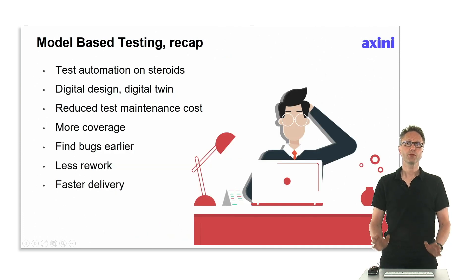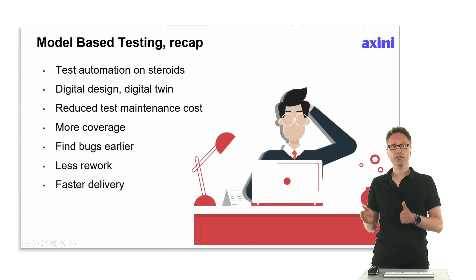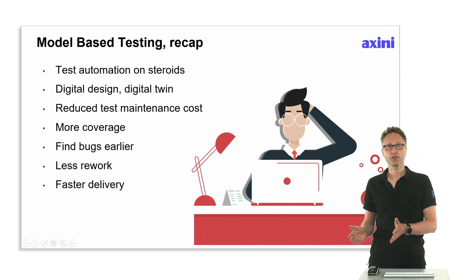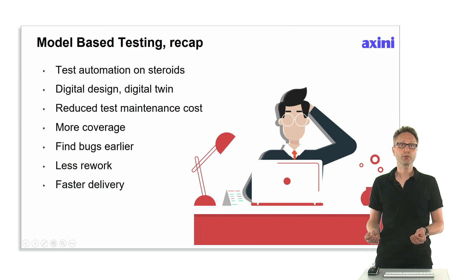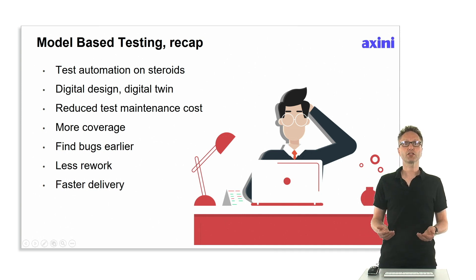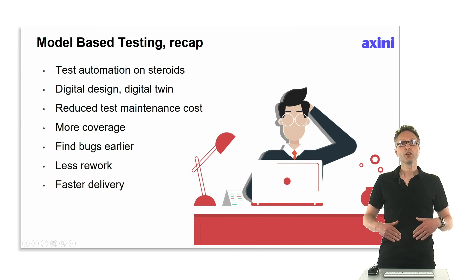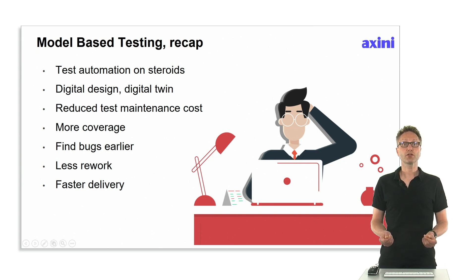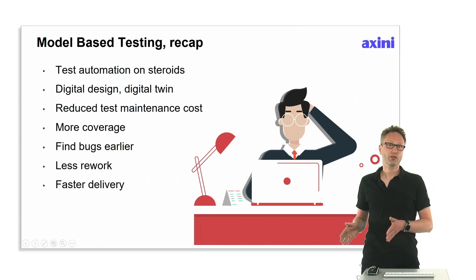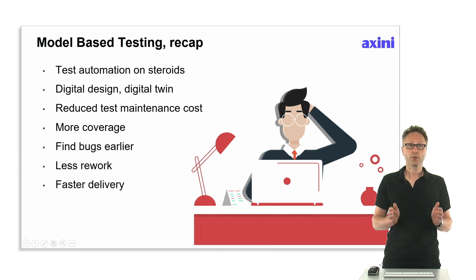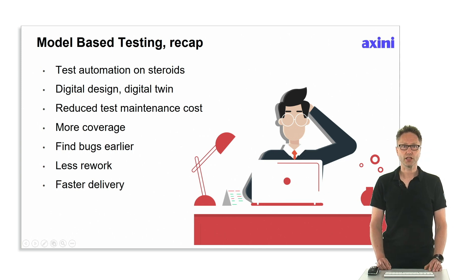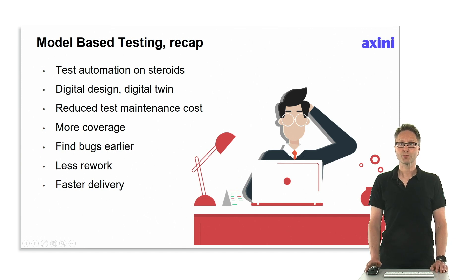To recap: model-based testing is a form of test automation — test automation on steroids — in a maintainable way. You make a digital twin, which reduces test maintenance cost while increasing coverage. This way you find bugs earlier with less rework, which gives faster delivery — especially important in agile projects. Thank you very much for watching this presentation.